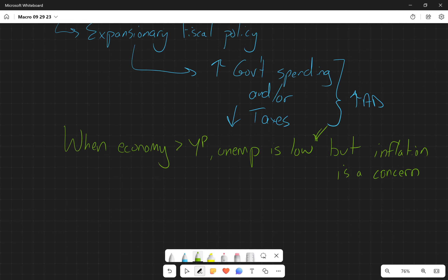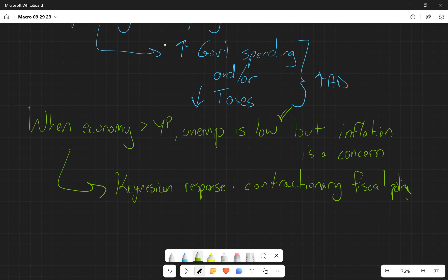So in this situation, the Keynesian perspective—and again, this always gets forgotten—the Keynesian response is to participate in contractionary fiscal policy, meaning that they would use tax increases or decreases in government spending.